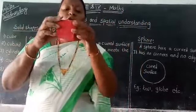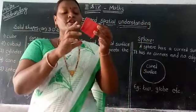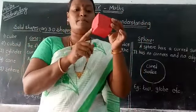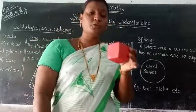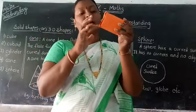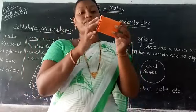In a cube, every face has a square shape. In a cuboid, every face has a rectangular shape.